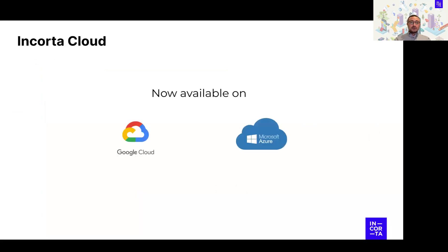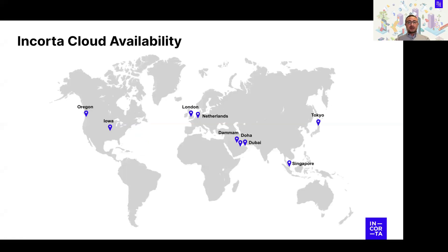Incorta Cloud is currently available on both Google Cloud and Microsoft Azure. Google Cloud is currently available in Saudi Arabia; Microsoft Azure is not yet there. The regions we currently cover include two regions in the US, regions in Europe, regions in the Middle East, and regions in the Far East — Tokyo and Singapore.